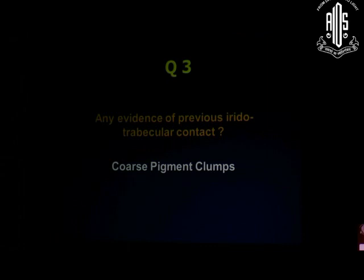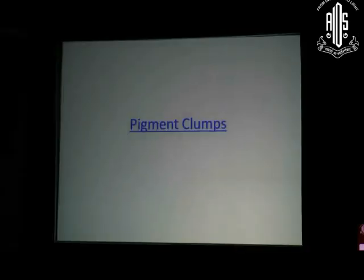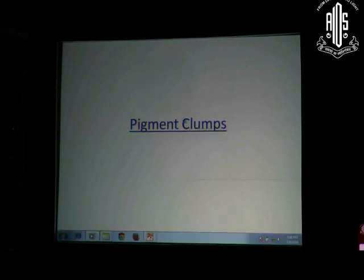If you put in a gonioscope and the angle is narrow but trabecular meshwork is visible, you have to identify evidence of previous contact — the iris has come in contact with the trabecular meshwork and pulled back, leaving some pigment. You have to identify pigment clumps. This is a very subtle sign that can make the difference in your decision to do laser iridotomy. These fine pigment clumps present in a narrow angle with trabecular meshwork visible is the hallmark that there has been previous contact between the iris and the trabecular meshwork.